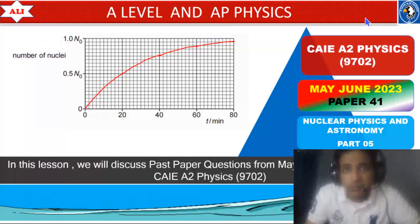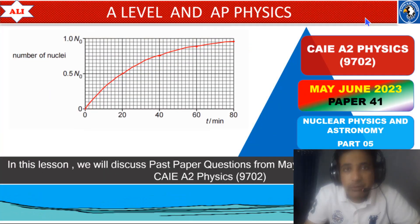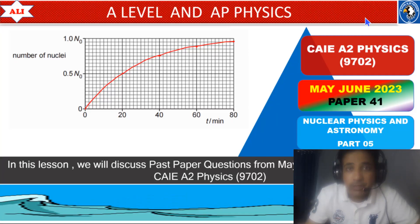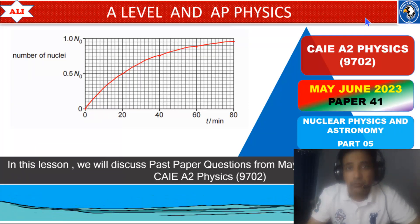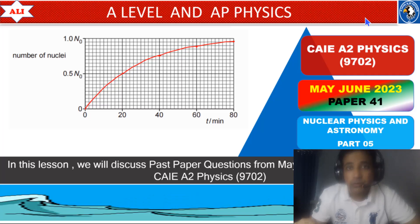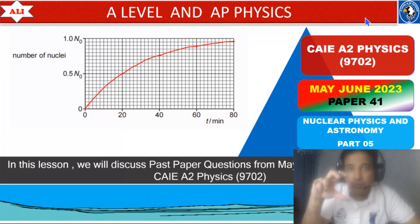Welcome to A-level and AP Physics. In today's lesson we will discuss past paper questions from the June 2023 Paper 4 Variant 1. We will start from question 9, which is about nuclear physics, and also discuss question 10, which is about astronomy and cosmology. In the previous videos we have already discussed questions 1 to 8, and you can check the channel for those solutions.